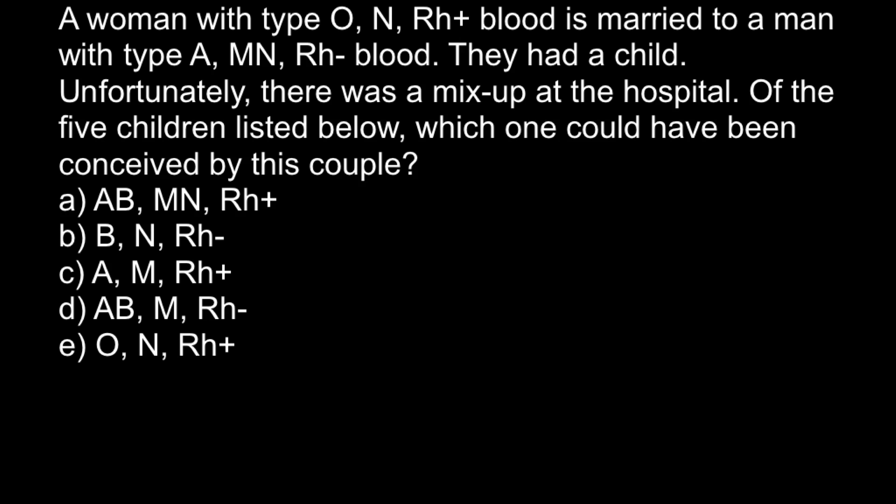Here is a problem. A woman with type O, MN, and Rh positive blood is married to a man with type A, MN, and Rh negative blood. They had a child. Unfortunately, there was a mix-up in the hospital. Of the five children listed below, which one could have been conceived by this couple? Here are the five answers you may choose from.